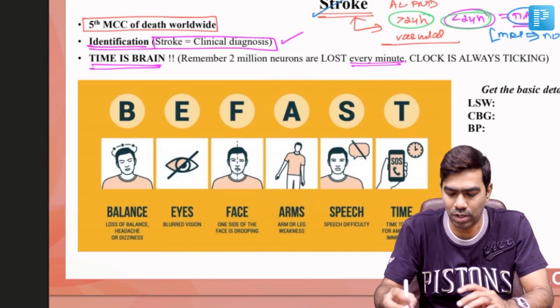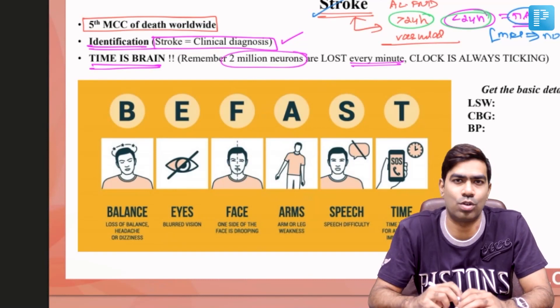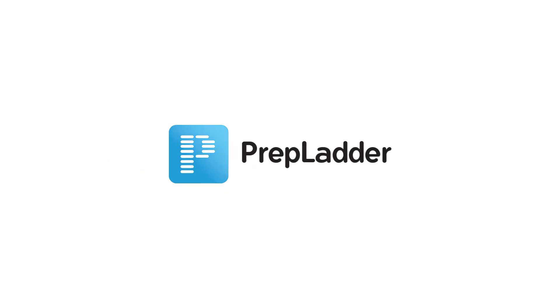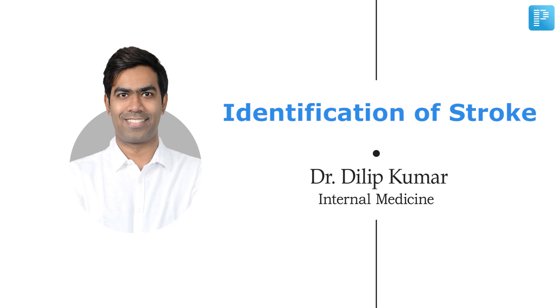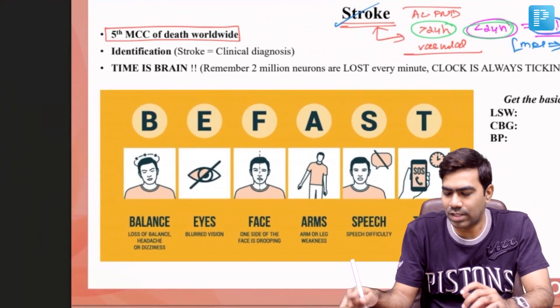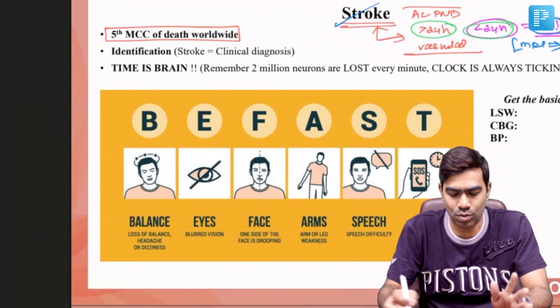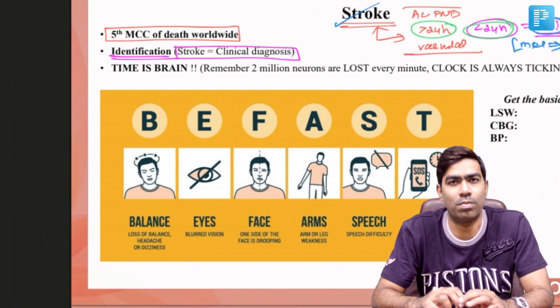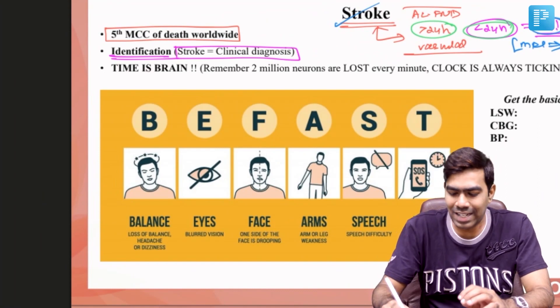Every minute you waste by not reperfusing the ischemic brain tissue, you are going to lose approximately 2 million neurons — and they are dead forever, you are not going to get them back. That is why the first thing you need to know regarding any stroke is identification. Remember, stroke is a clinical diagnosis. You may confirm it with imaging, but initial identification is always clinical. Remember: time is brain.